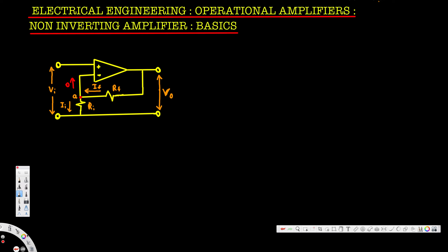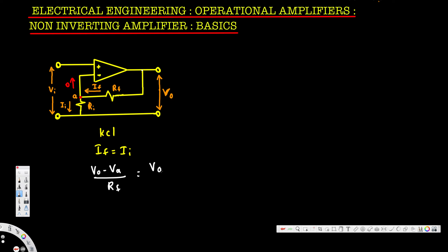So if is equal to ii. If we apply Kirchhoff's Current Law at this point, we can say if is equal to ii — that's going to be the first equation. If is going to be the output voltage at this point right here, so that's vout minus va, divided by the resistance in between, that is rf. And ii is going to be equal to va minus 0, because this one is connected to ground, divided by the resistance in between, that is ri.